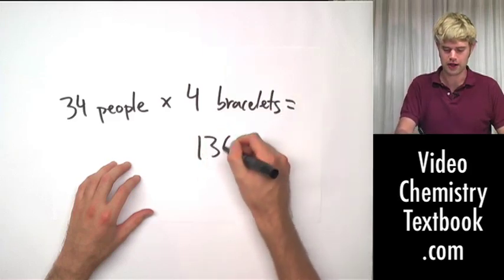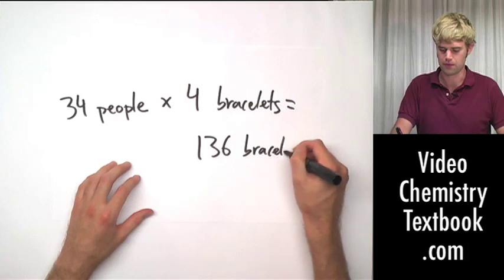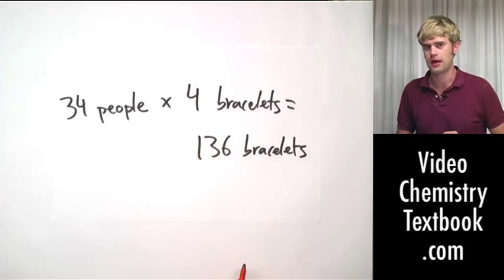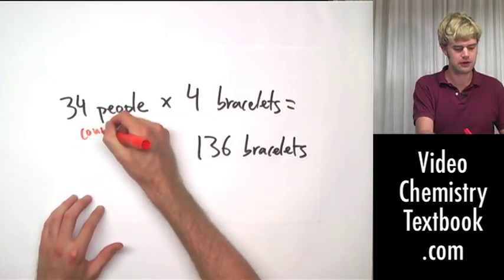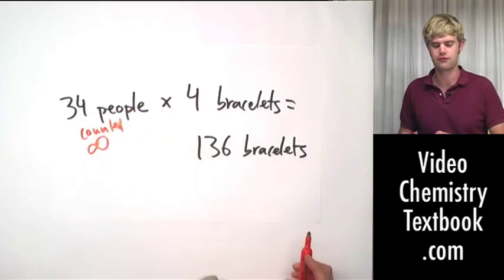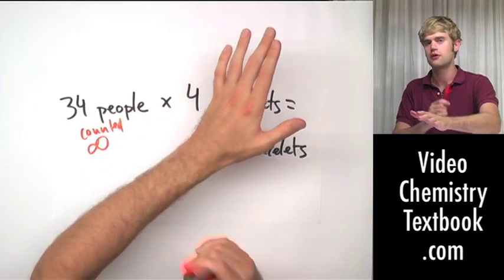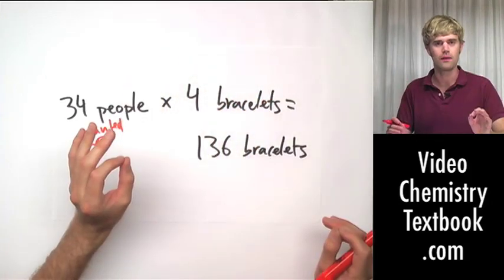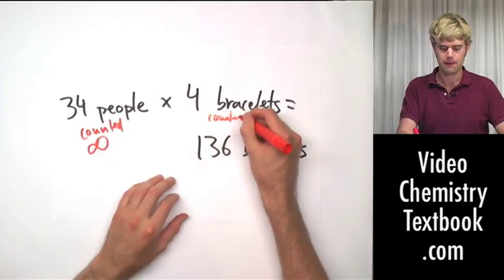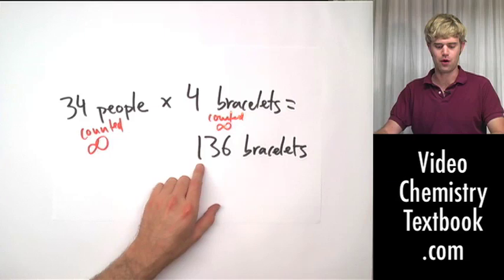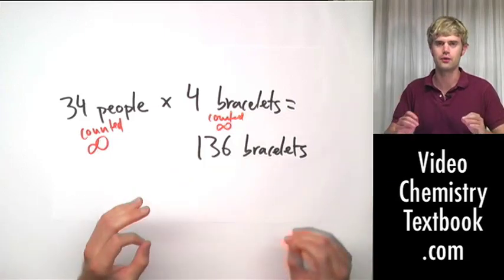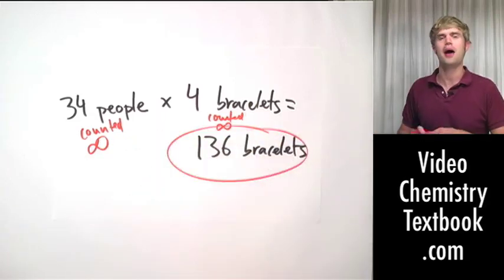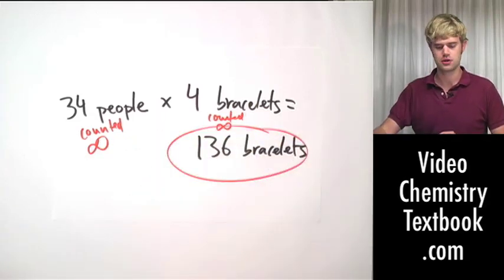And I'm going to get 136 bracelets total for the group. How do I round this? Or even do I need to round it? Well, 34 people has been counted. There is absolutely no uncertainty as to how many people there are. So this number is counted, infinite number of significant figures. Four bracelets. It's not 4.2, 4.4, 4.56. It's exactly four. So, counted, infinite number. Which means that I want to round this to an infinite number of significant figures. In other words, I don't worry about significant figures. My final answer is 136 bracelets. I'm absolutely sure there is no uncertainty with this answer here.